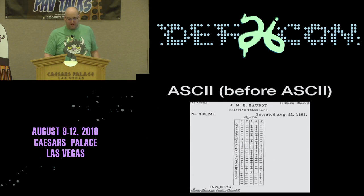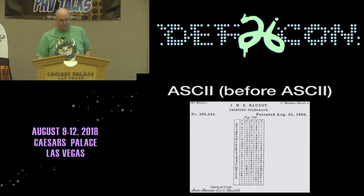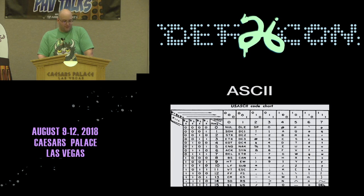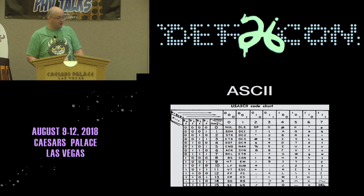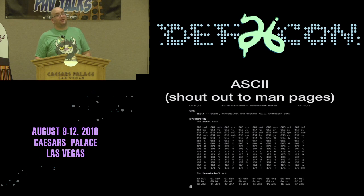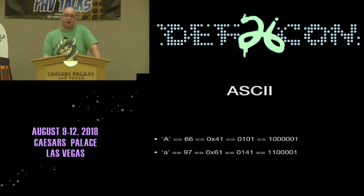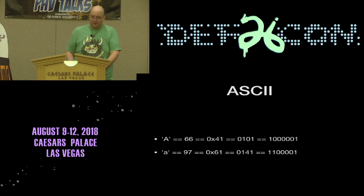To understand a little more, it helps to know what ASCII is. Before ASCII there was a 5-bit character encoding called Baudot — not very important to this talk, but I thought it was really cool. This is an older U.S. ASCII code chart. And shout out to ManPages — any time you want to look something up, I highly recommend ManPages. Basically what we're talking about is how these characters are encoded in memory and physically represent actual ones and zeros.